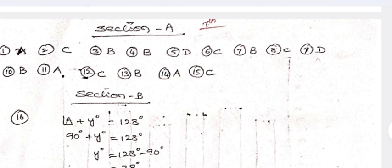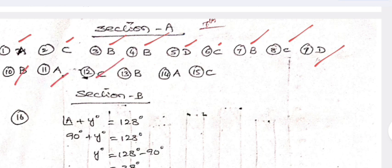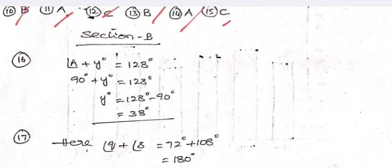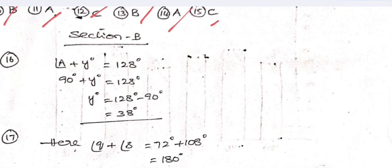Now the solutions. Section A answers: 1-A, 2-C, 3-B, 4-B, 5-D, 6-C, 7-B, 8-C, 9-D, 10-B, 11-A, 12-C, 13-B, 14-A, 15-C. For question 16, angle a plus y equals 128; since a is 90 degrees, y equals 38 degrees.